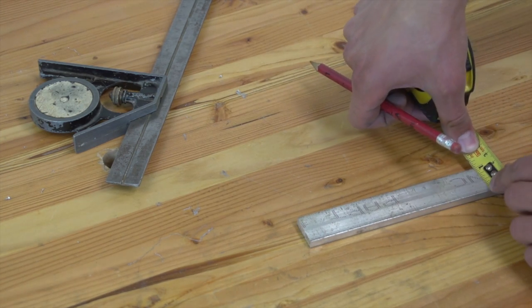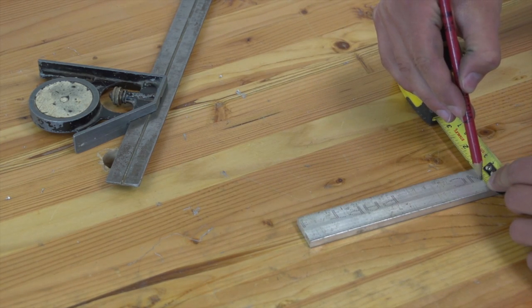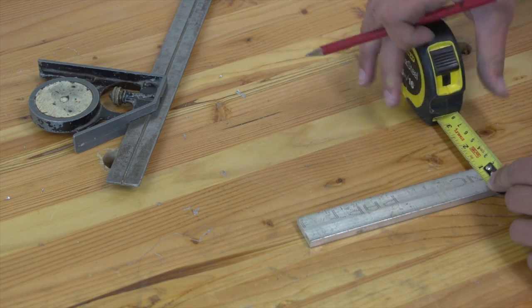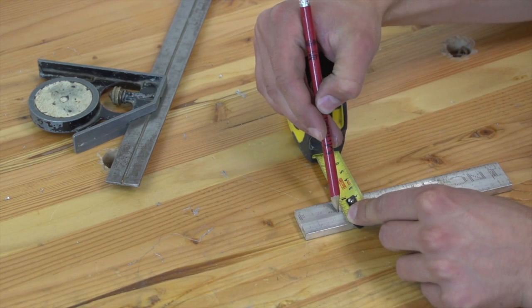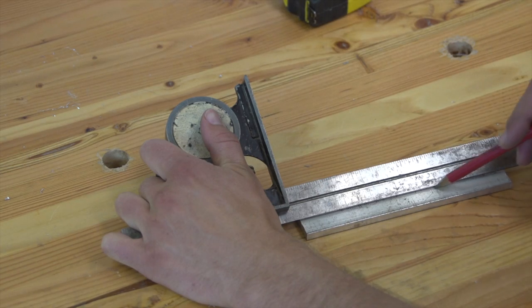Start off with one of the 6 and a quarter inch bars. Make a line directly down the center from end to end by first measuring out the center on either side, that's half an inch, and then connecting the points with a straight edge.